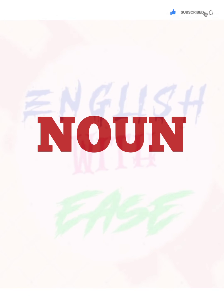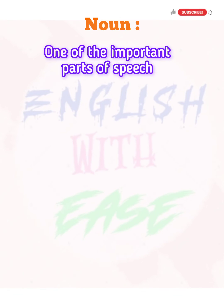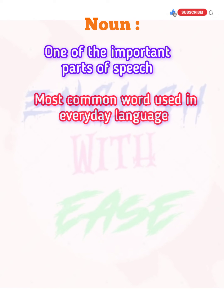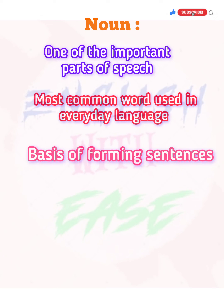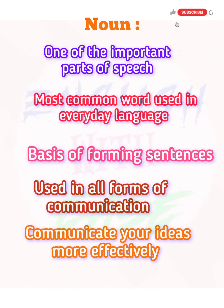The first one is noun. Have you ever wondered what a noun is and why it's so important to learn? Nouns are one of the most important parts of speech in any language. They are the most common words used in everyday language, and they are the basis of forming sentences. It is important to learn about nouns because they are used in all forms of communication. Knowing how to use nouns correctly can help you communicate your ideas more effectively.